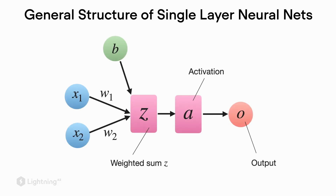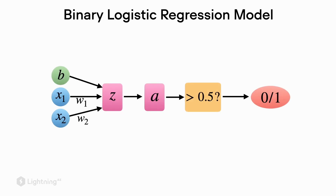Before we dive into the details, let's recap the general structure of single-layer neural networks. Here we have the schematic where we have the inputs on the left-hand side and the bias unit. We compute the weighted sum z, which is passed to the activation function, which returns the activation a, and from the activation we obtain class label o. This is the structure of the logistic regression model covered in unit 3, including the threshold unit that follows the activation.